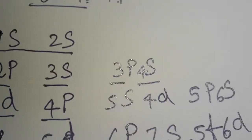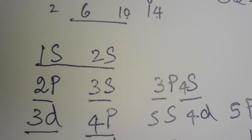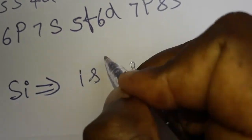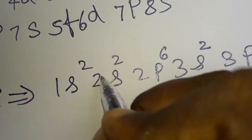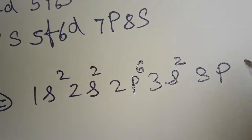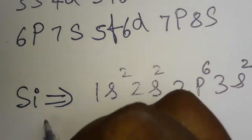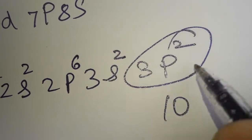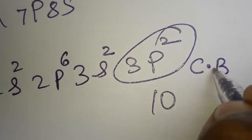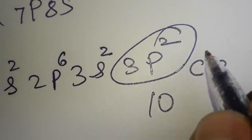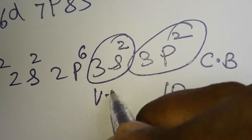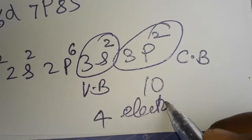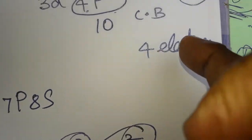For silicon, atomic number 14: we write 1s², 2s², 2p⁶, 3s², 3p². That gives 2 + 2 + 6 + 2 = 12 electrons, with only 2 remaining. p requires 6 electrons but only has 2 electrons here. So the conduction band has 2 electrons and the valence band also has 2 electrons.